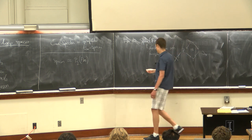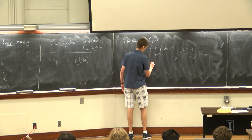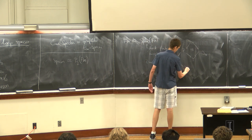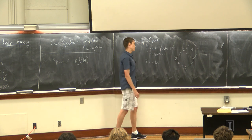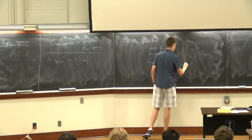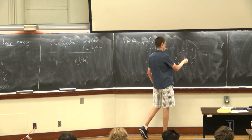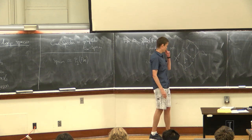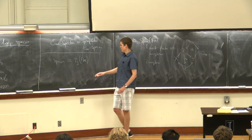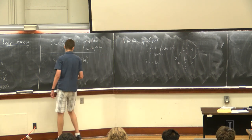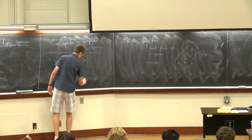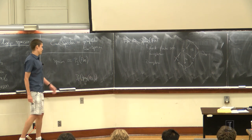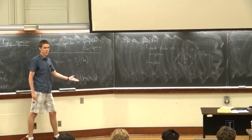This is actually a two-category, because if I have a second span from X to Y and I'm given an identification between Z and Z prime that makes both triangles commute, that's a two-morphism in that category. I can take the non-abelian derived category of this two-category of spans of finite sets, and this gives the infinity category of infinity spaces.